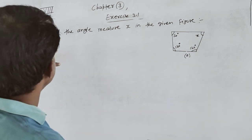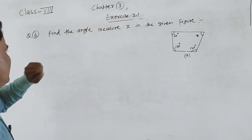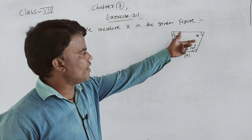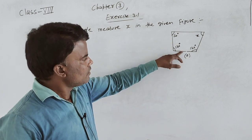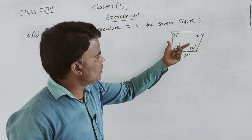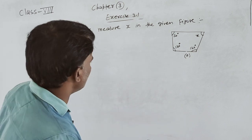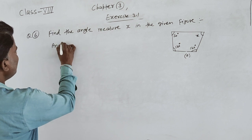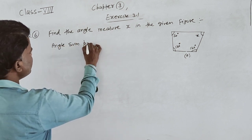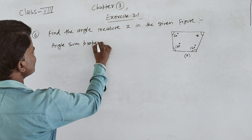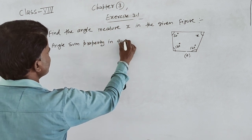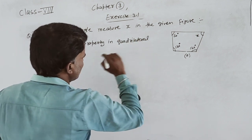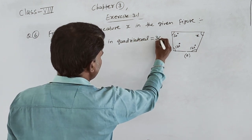After that, हम discuss करते हैं exercise 3.1 का question number 6: Find the angle measure X। X की value find करने के लिए, जो figure हमारे पास given है, यह 1, 2, 3, 4 — यह quadrilateral है। तो angle sum property in quadrilateral use करेंगे।